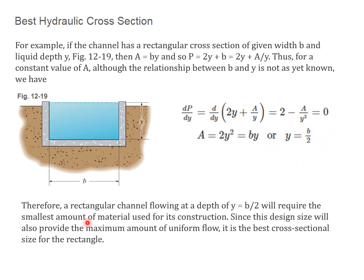Therefore, for a rectangular channel, flowing at a depth of Y equals B over 2 will require the smallest amount of material used for its construction. Since this design will also provide the maximum amount of uniform flow, it is the best cross-sectional size for the rectangle. You can repeat this exact analysis for other shapes.